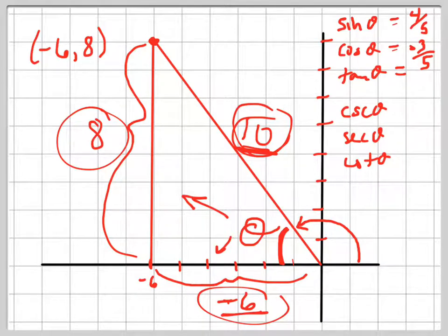And the tangent is the opposite, 8, over the adjacent, negative 6. So that's negative 4 thirds when I reduce it.